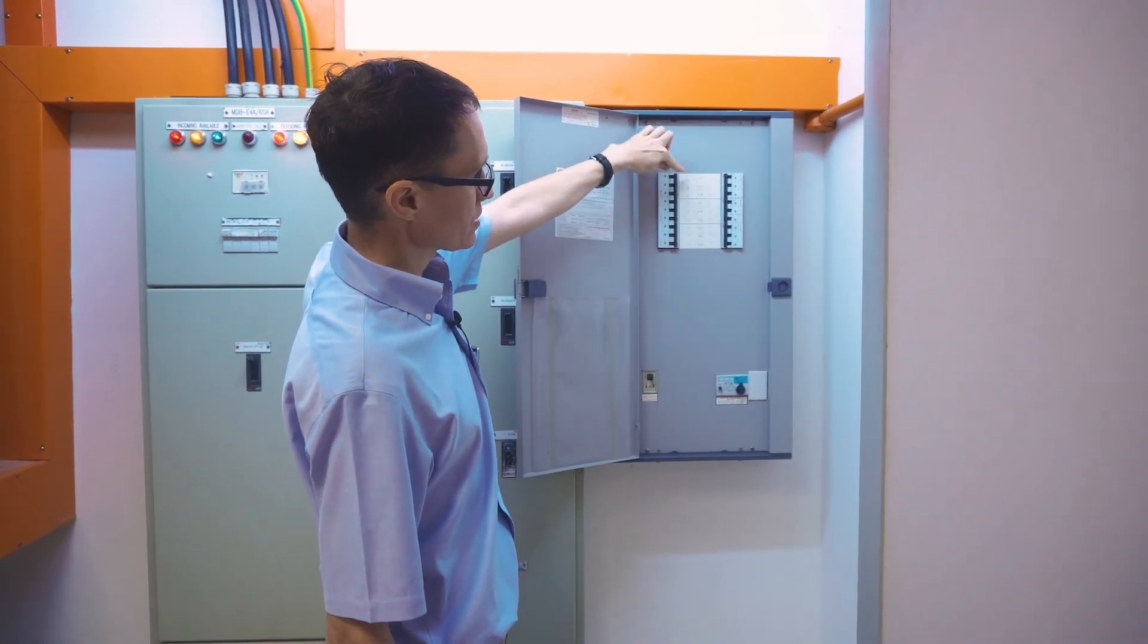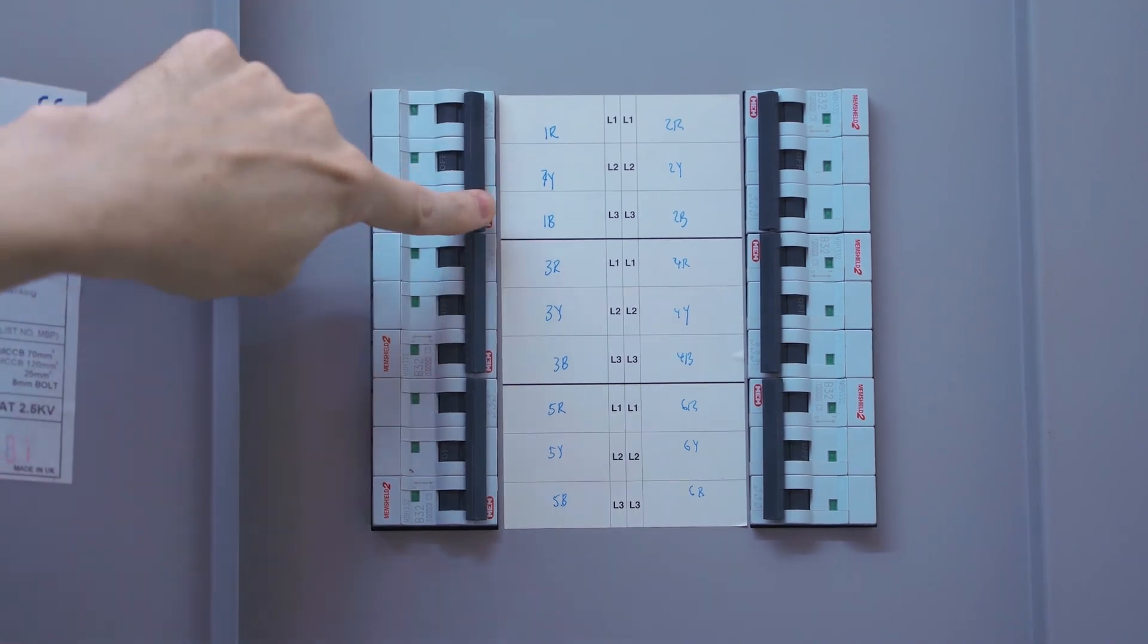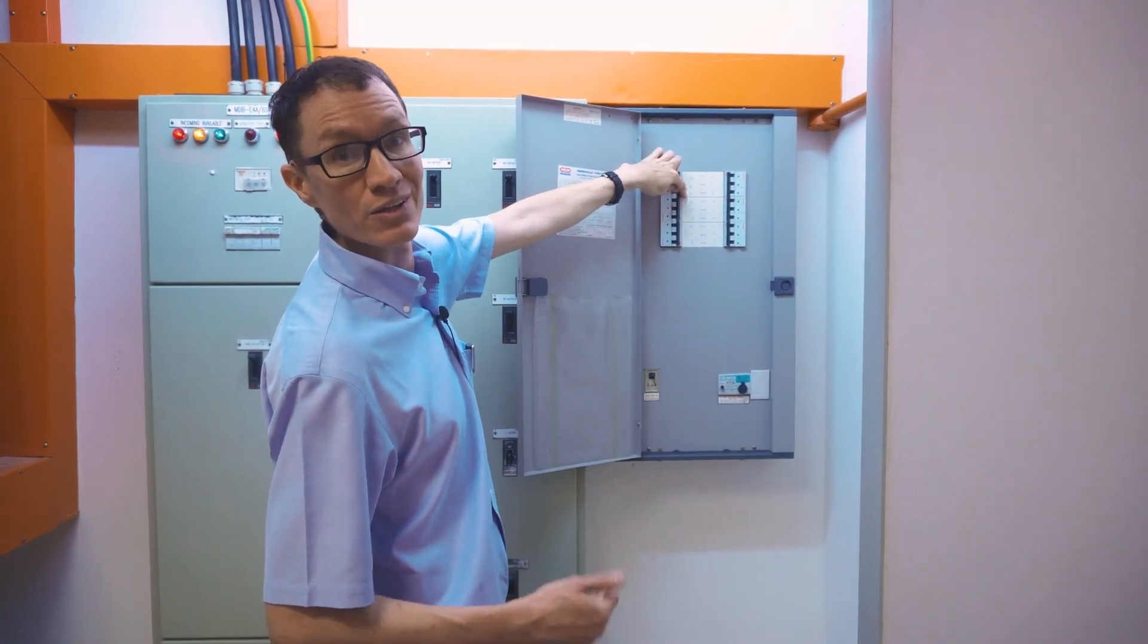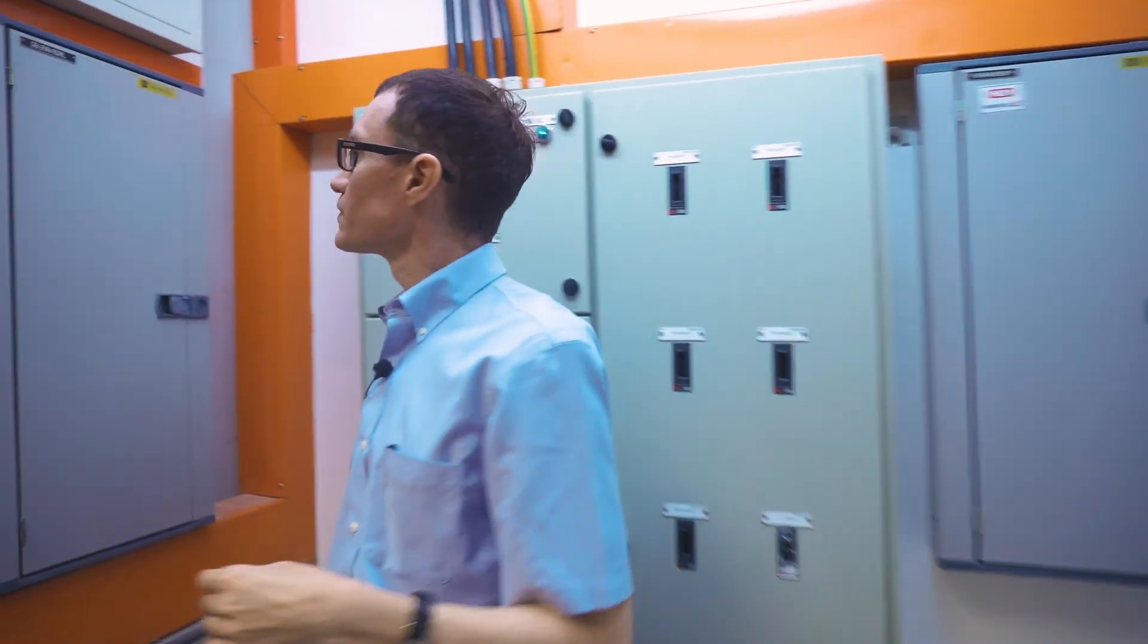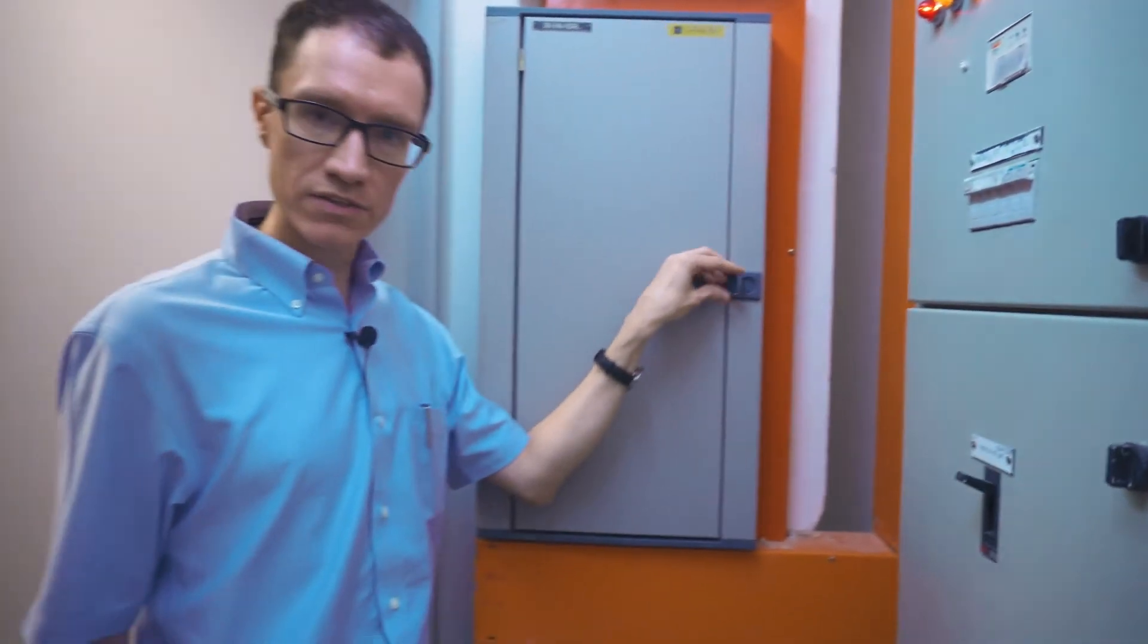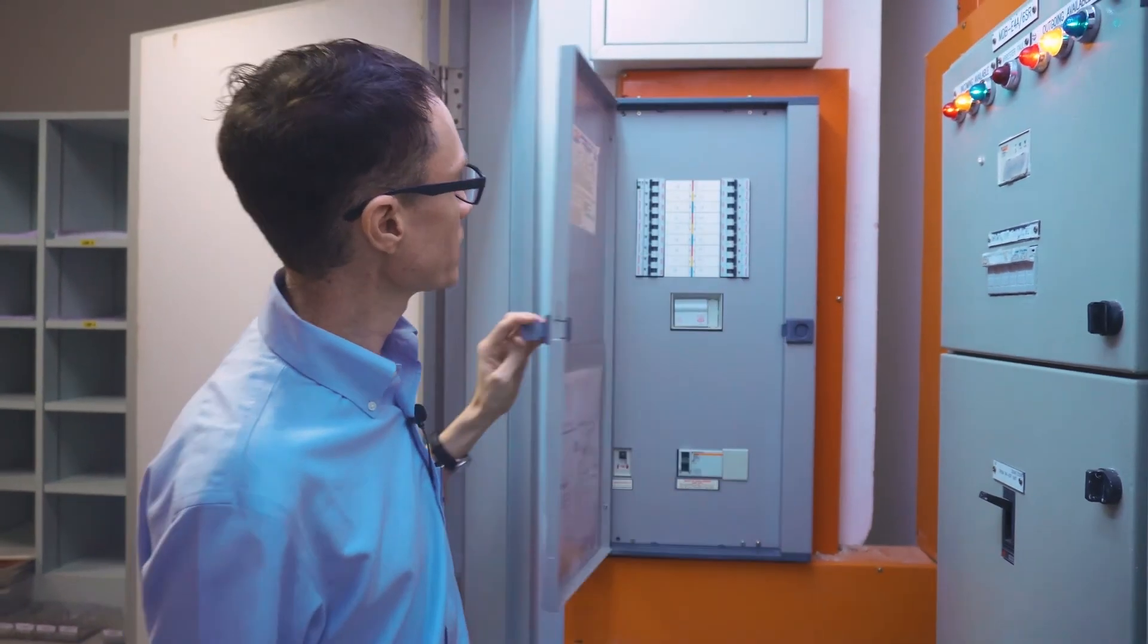Now these particular circuit breakers here are not color coded, but we can see from the labels which phase each breaker corresponds to. For example, this says R, Y, and B corresponding to the red, yellow, and blue phases.